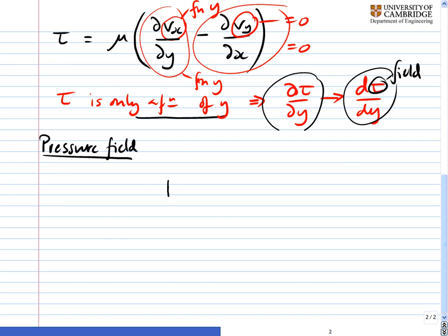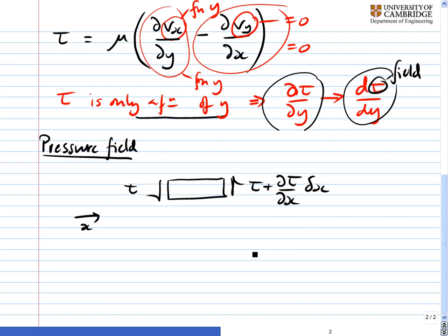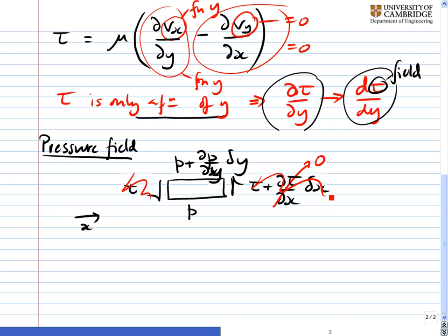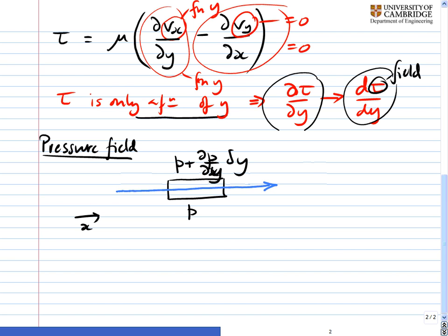Now let's think about the pressure field by considering a little element of fluid. It has on each end, acting in the vertical direction, the shear stresses: tau and tau plus d(tau)/dx times delta x — those are the shear forces acting in the vertical direction. The pressure forces acting in the vertical direction are p on one side and p plus dp/dy times delta y on the other. Now we know that d(tau)/dx = 0 from the argument above, so those two shear terms cancel out.